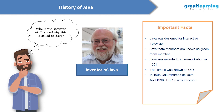The principles for creating Java were: simple, robust, portable, and platform-independent. The programming language should also be secure, high performance, multithreaded, architecture-neutral, object-oriented, interpreted, dynamic, and distributed. These were the principles they had for the language at that time.